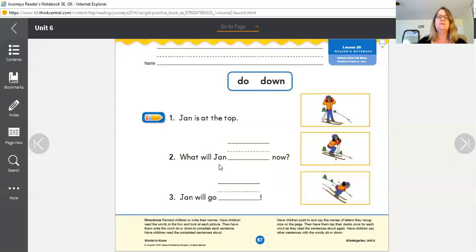So the first one, Jan is at the top. We don't need to add a word to the sentence. But here's a picture, she's at the top. Number two is what will Jan blank now? We have two choices. And if you're not sure, remember, try one in the sentence. What will Jan do now? That makes sense. What if we tried this one, down? What will Jan down now? And that doesn't make sense. So if you're not sure, remember, try them in a sentence and your brain's going to say that sentence makes sense.